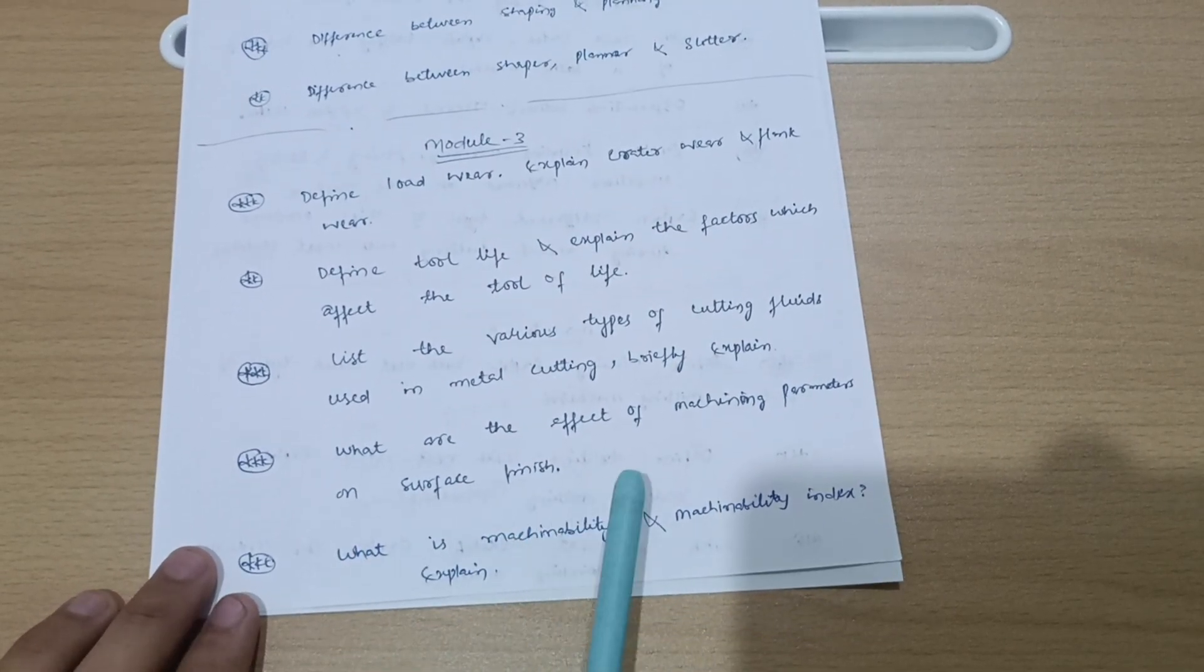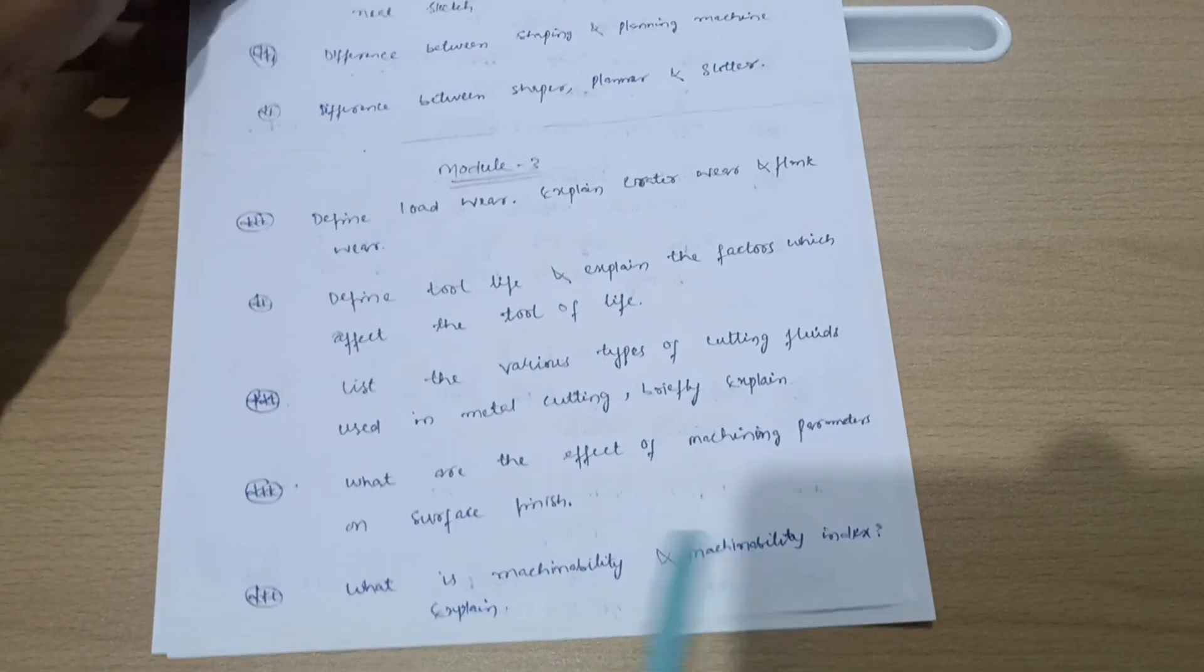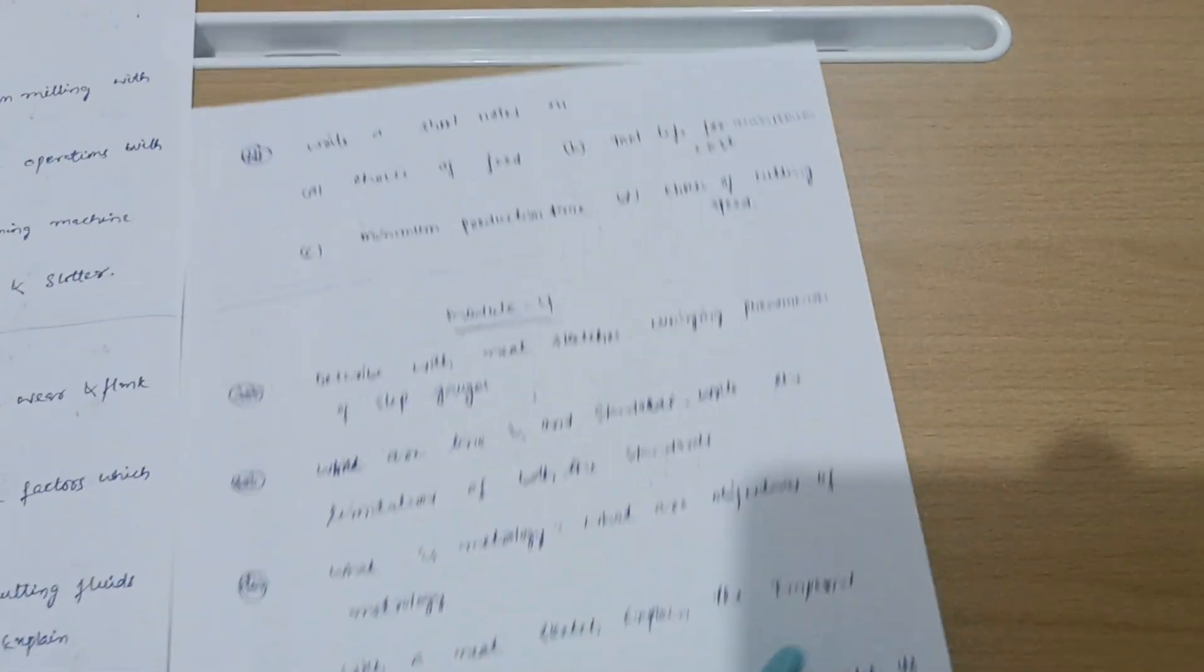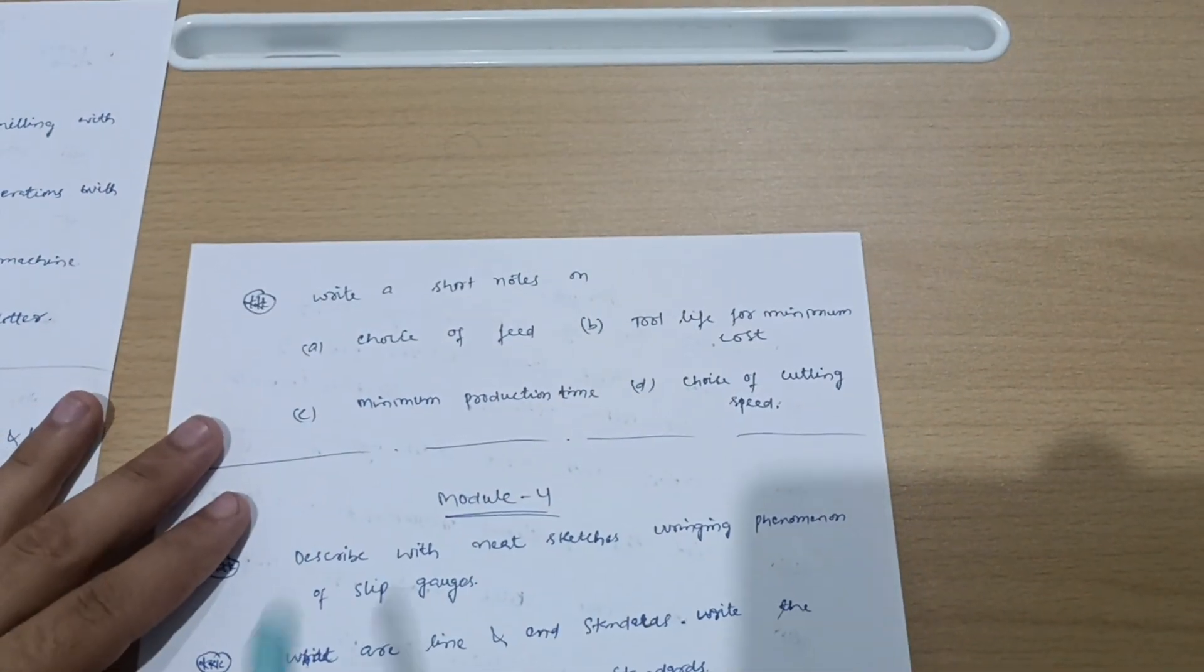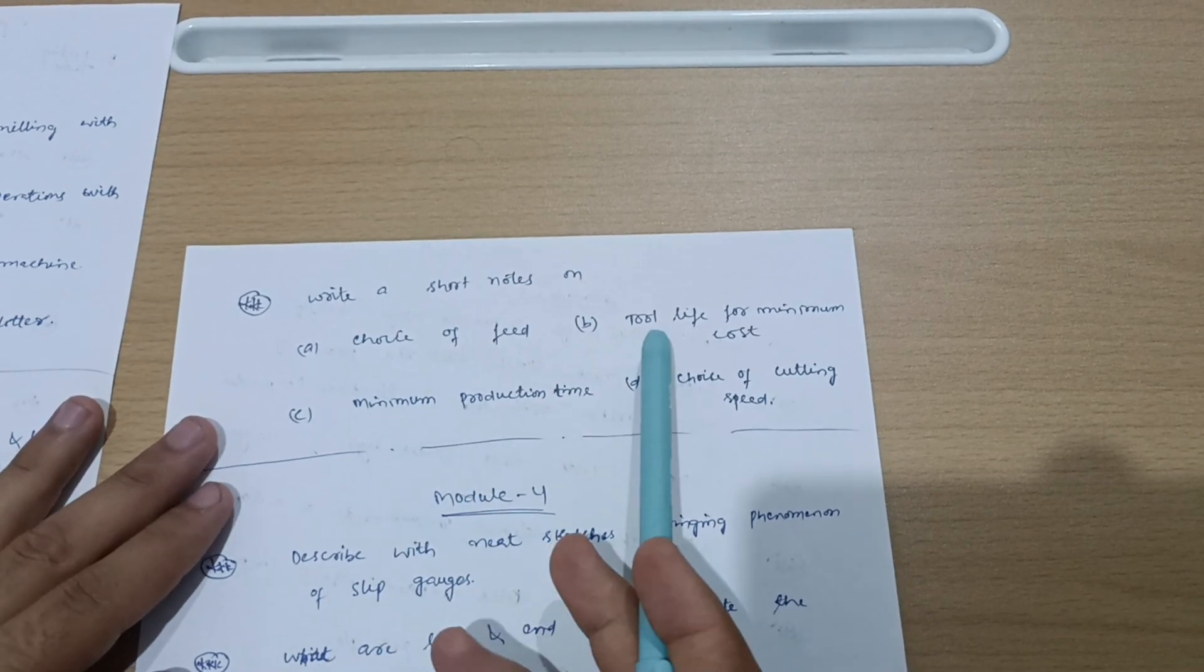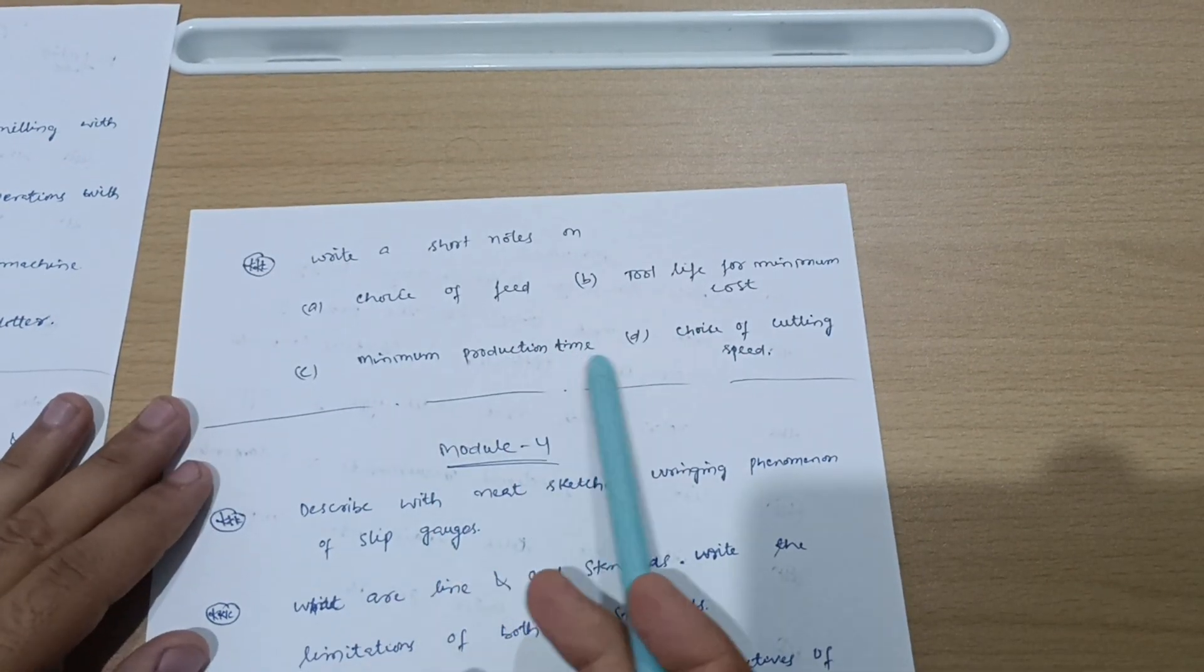Briefly explain what are the effects of machine parameters on surface finish. Next is what is machinability and machinability index, explain it briefly. Last question is write a short note on choice of feed, tool life for minimum cost, minimum production time, and choice of cutting speed.